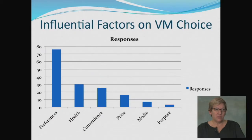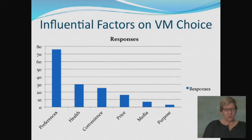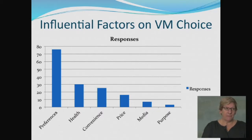This graph shows the different categories of purchase influences. The most frequent responses were in the preference category, followed by health, convenience, and so on.